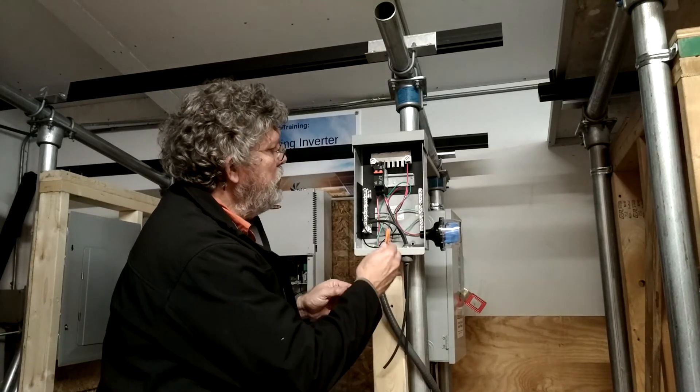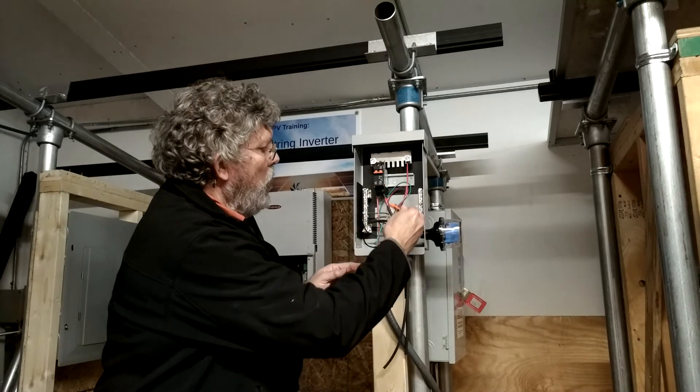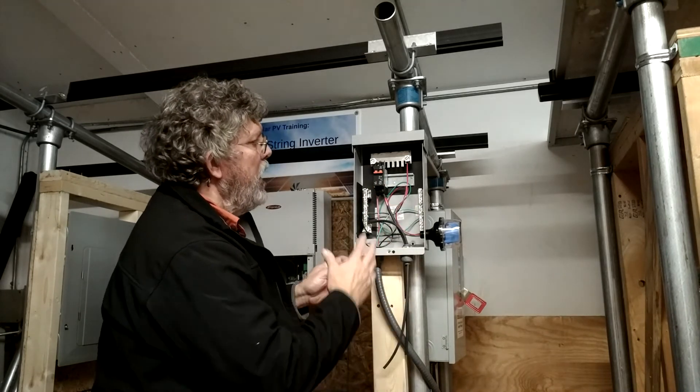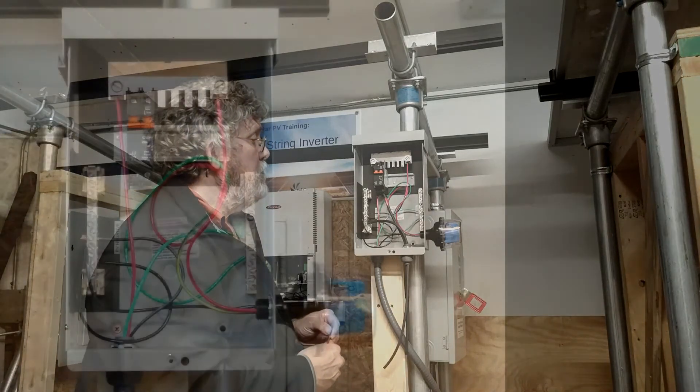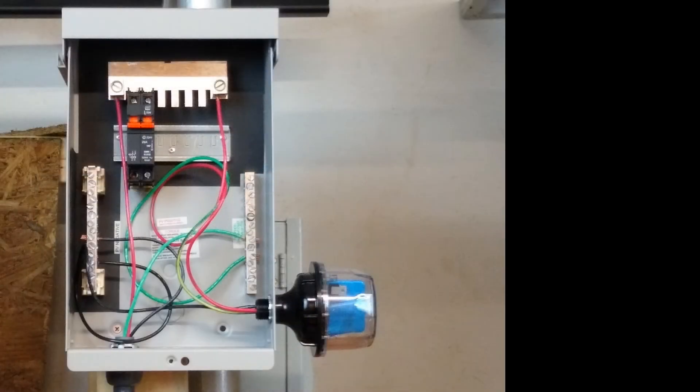So we have multiple strings coming in, only one string leaving, and the wiring is fairly self-evident within this box. Of course, it's always dangerous to say things are pretty self-evident. So let's take a closer look at how the wiring is done within the box when it's completed.